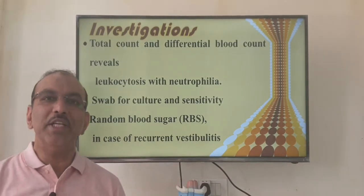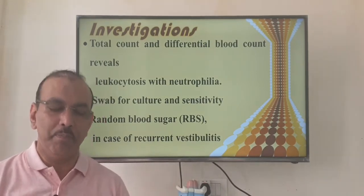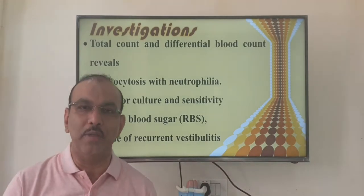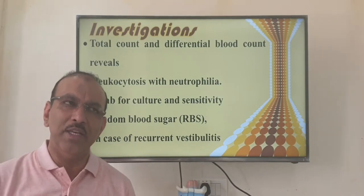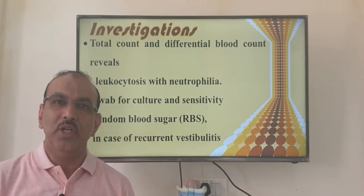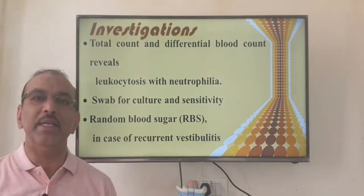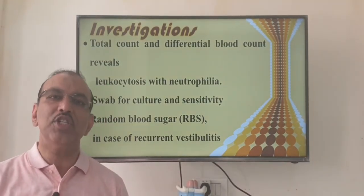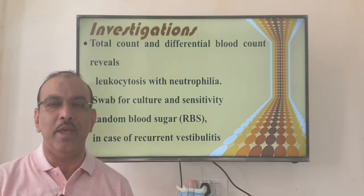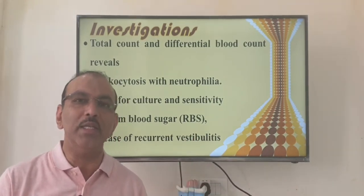If the patient gets recurrent nasal vestibulitis — two or three episodes per year — we need to check for diabetes. Even if they say they were normal six months ago, we check a random blood sugar. If they are diabetic and already on tablets or insulin, we check the last three months' blood sugar control by doing glycosylated hemoglobin, i.e., HbA1c.